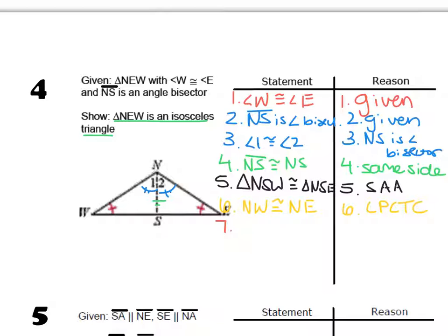And then my very last step is to say triangle NEW is isosceles by the definition of isosceles, right? Two sides are equal.